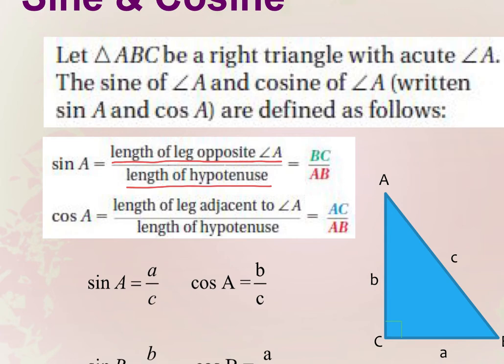In this figure, if we're finding the sine of A, the side opposite A is little a, and it's over the hypotenuse, which is C. So the sine of A is a over C. The cosine of A is the leg adjacent to A, which is B, over the hypotenuse, which is C. So sine and cosine both involve the hypotenuse: sine is opposite over hypotenuse, and cosine is the adjacent leg over the hypotenuse.